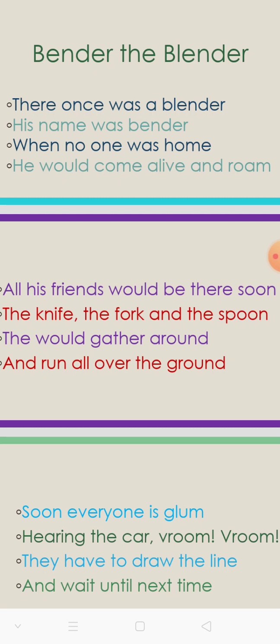யார் அல்லவா அதோட friend என்று பார்த்தால் — knife means கத்தி, fork means நூடுல்ஸ் fork, and then spoon means normal spoon. இதி எல்லாம் அதோட friends. They would gather around and run all over the ground. Ground means kitchen-ல் என்று சொல்வோம், ஏனென்றால் இந்த items எல்லாம் kitchen-ல் தான் இருக்கும். உயிர் வந்தவுடன் friends எல்லாரும் வந்து என்ன செய்கிறார்கள்?